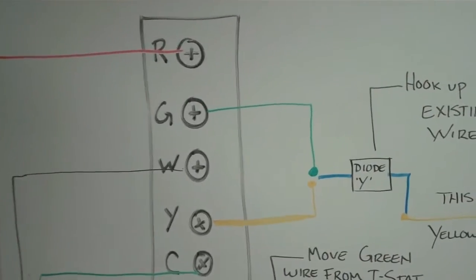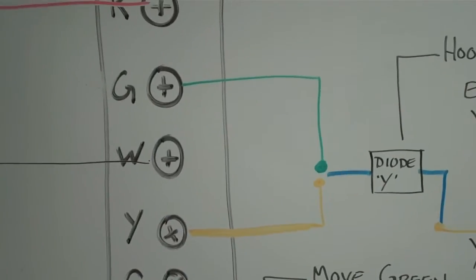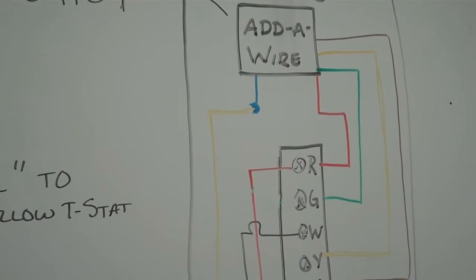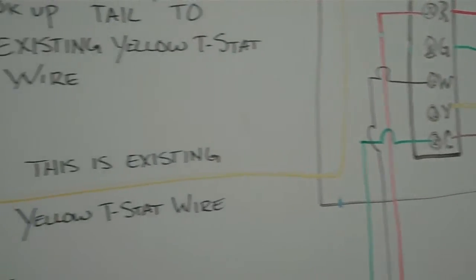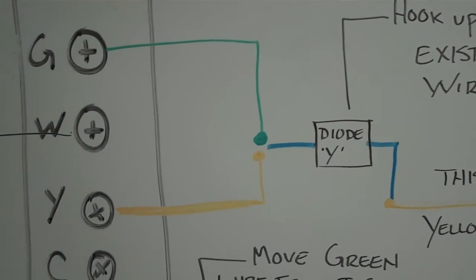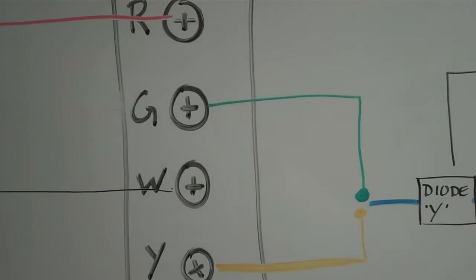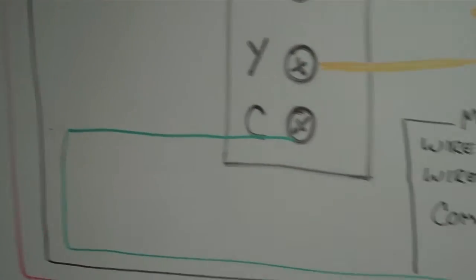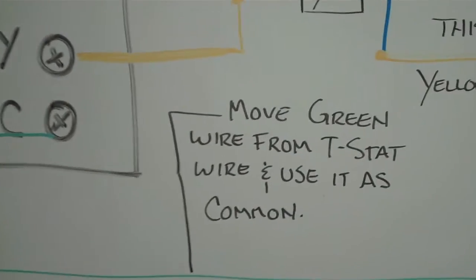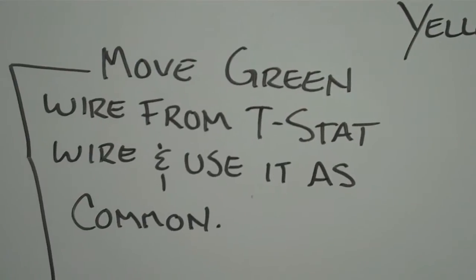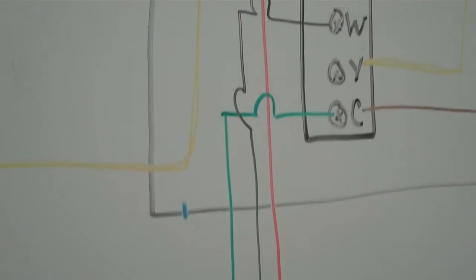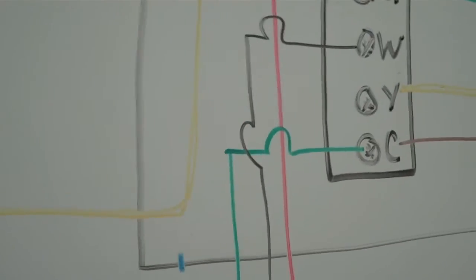So what we do is we remove the green and the yellow from the thermostat and we use the yellow to go back to the blue on the add-a-wire module. That goes back to that diode Y. The green we've taken off of this terminal I use to go down to the common. So now the green goes from the common on the thermostat. We just move the green wire from the T-stat wire and use it as the common. It goes all the way back and onto the common in the air handler.